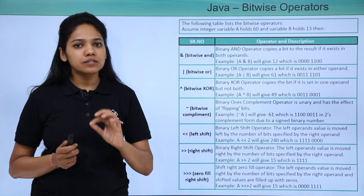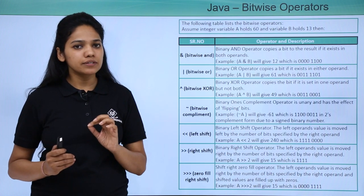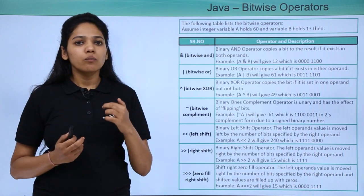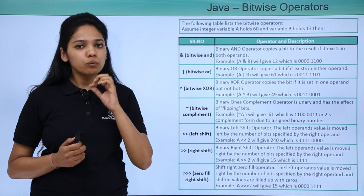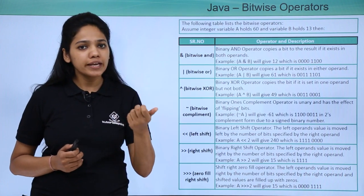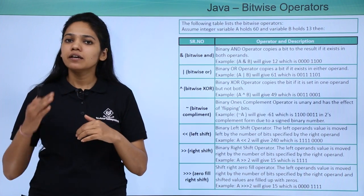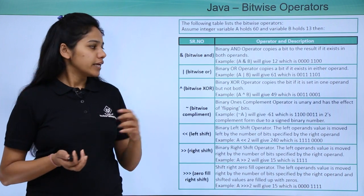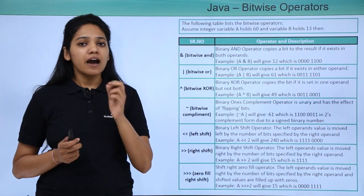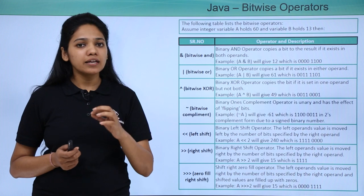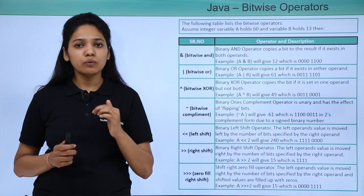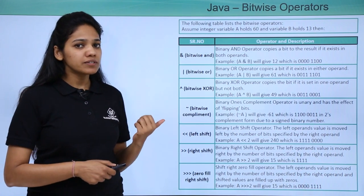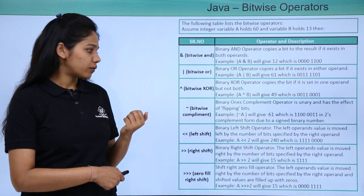For bitwise AND, if either operand is 0, the resulting value will be 0. For bitwise OR, either of the bit values of a or b should be 1 for the result to be 1. For XOR, if either of them is 0 or either of them is 1 (i.e., they are the same), the result will be 0.